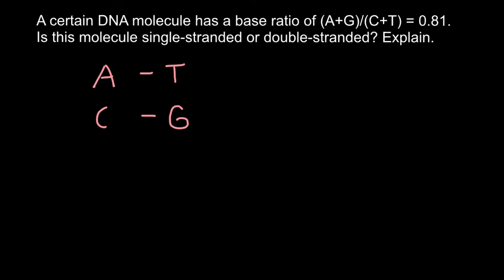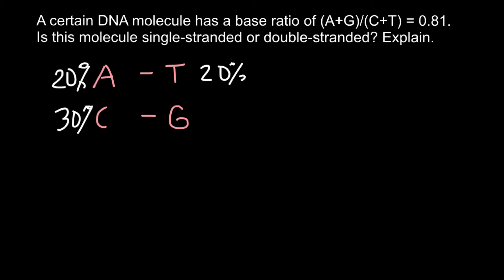For example, if we have 20% adenine, that means we should also have 20% thymine. 20 plus 20 gives us 40%, so the remaining 60% must be cytosine and guanine — meaning 30% cytosine and 30% guanine.